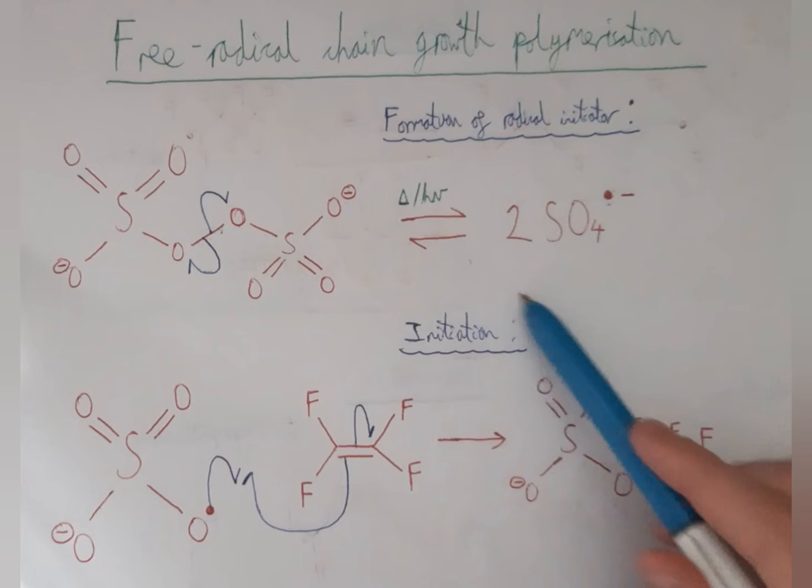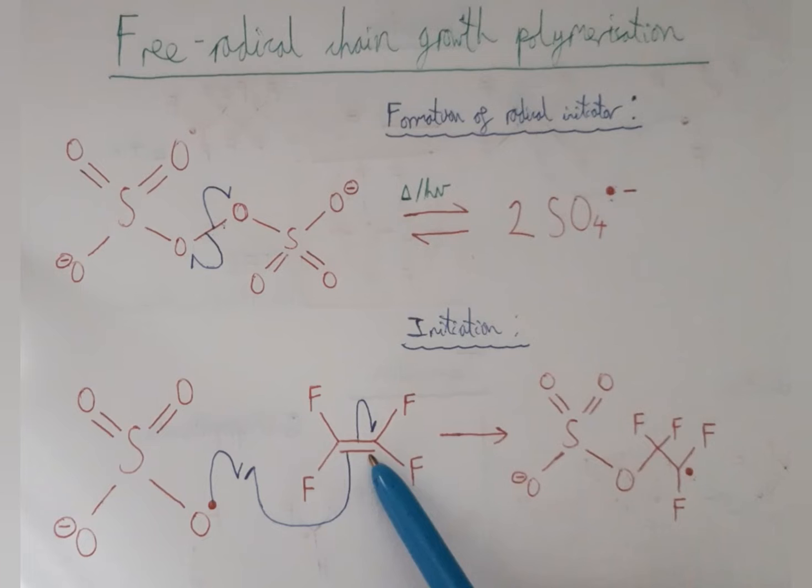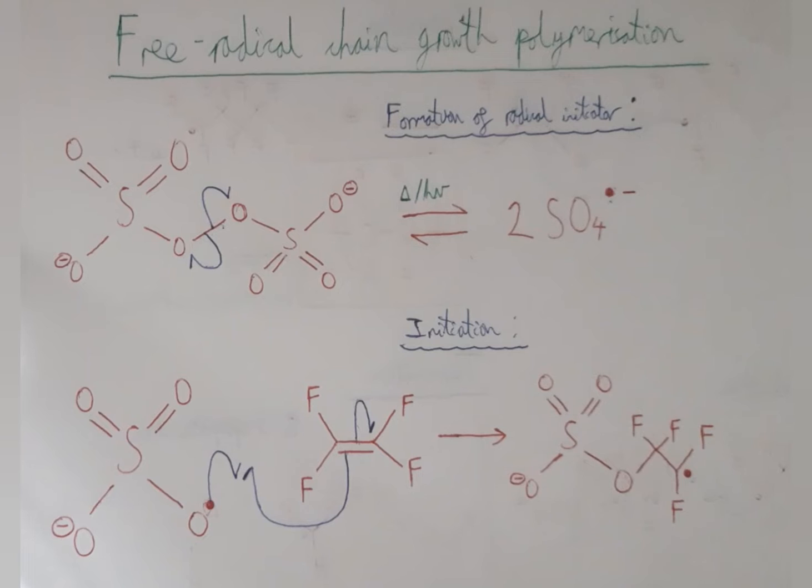In the initiation step, the first monomer unit reacts with this activated initiator, this radical anion. One of these double bonds in the alkene breaks by the movement of one electron to this carbon atom and the movement of one electron to form a bond with this unpaired electron, the oxygen. That then forms another longer-chained radical with the dot there where the carbon is now.